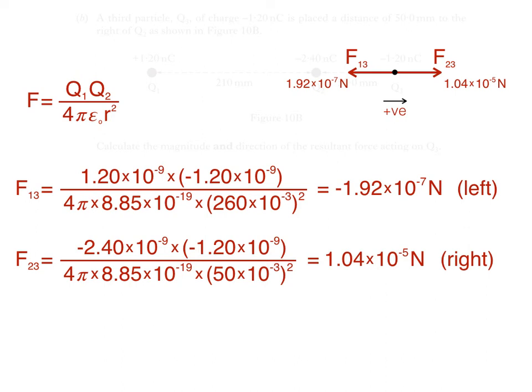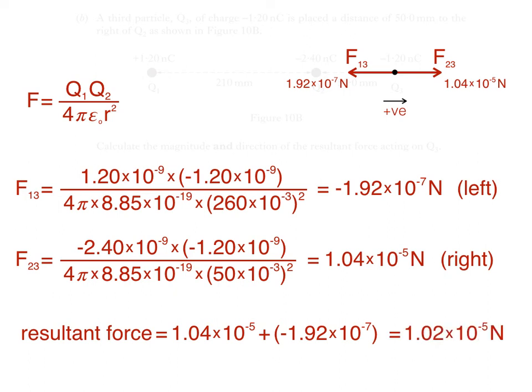The resultant force acting on Q3, then, is 1.04 times 10 to the negative 5, plus negative 1.92 times 10 to the negative 7, which equals 1.02 times 10 to the negative 5 N. Since this value is positive, it must be acting to the right.